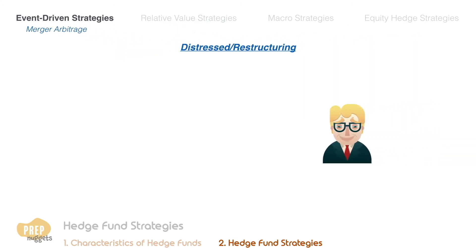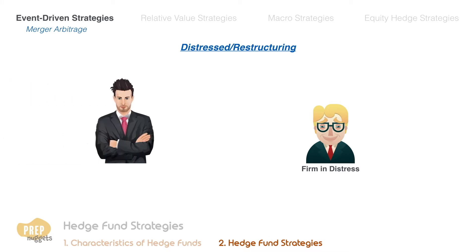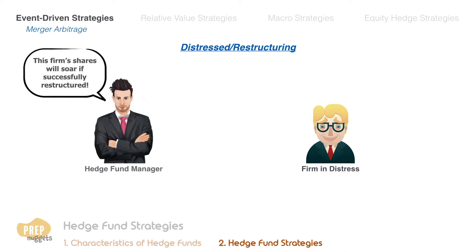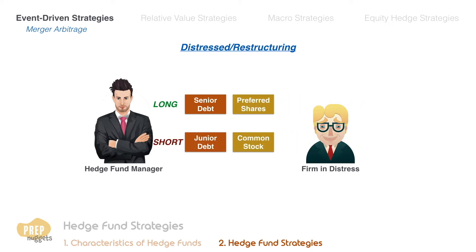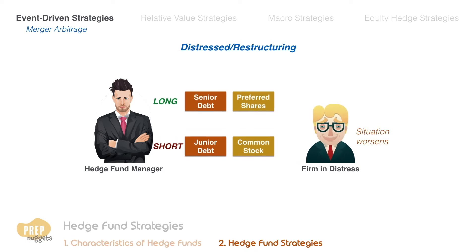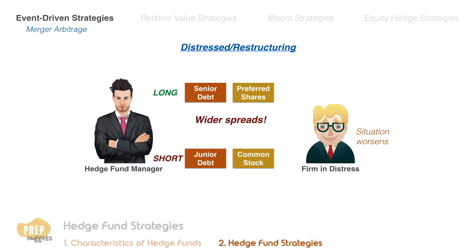Distressed restructuring is the strategy of buying the securities of firms in financial distress or close to bankruptcy. If the hedge fund manager feels that the distressed firm is likely to be successfully restructured, he buys the company's shares hoping that the share price will recover. A more complicated approach is to long the senior debt and short junior debt, or buy preferred stock and short common stock. This is done in expectation that the prospects of the company will worsen, resulting in a widening spread between the riskier and less risky securities of the company.